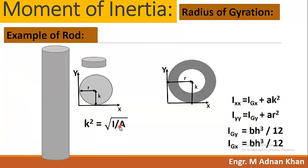For the second example, consider a solid rod versus a hollow pipe with the same cross-sectional area — both equal to one square inch. In the solid rod, material is compactly concentrated around the center, giving a minimum radius of gyration. In the hollow rod, the radius of gyration along both axes is larger, meaning the material is more scattered and the member has less tendency to buckle under compression.